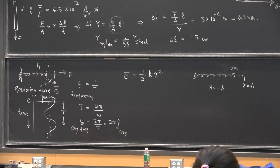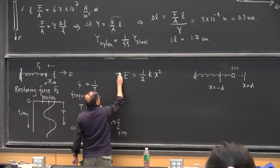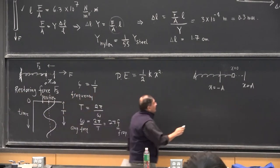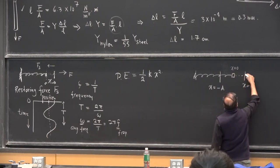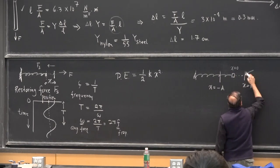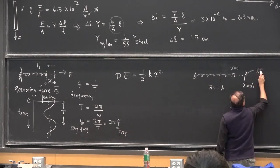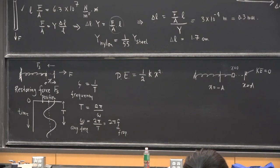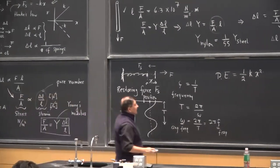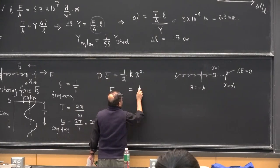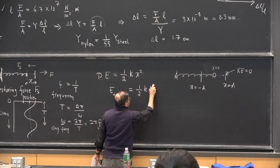The potential energy of the spring is ½kx². At t equals 0, I have taken the spring to the stretched point and let it go. Just until the moment I let it go, the kinetic energy is going to be 0 because the motion hasn't begun yet. However, the system has energy because I have stretched the spring — all its energy must be potential energy. So at t equals 0, I can write my total energy as ½k times A squared.